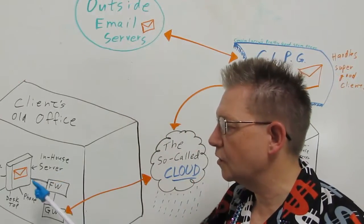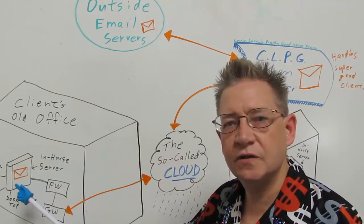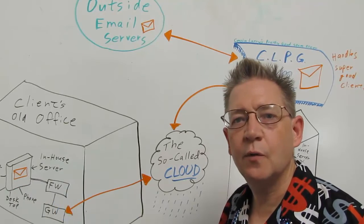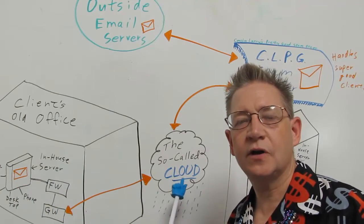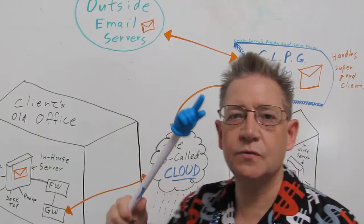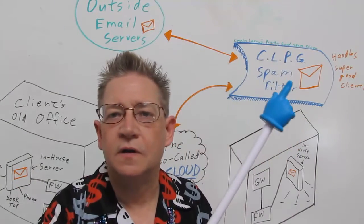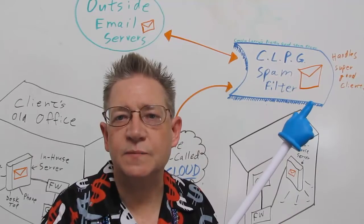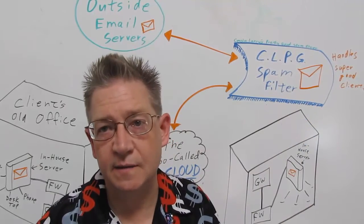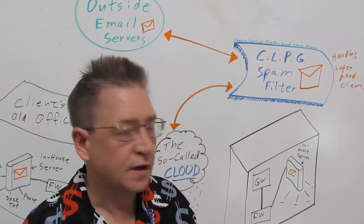Here's the setup. At the old office you've got your server, your firewall, your gateway, and then out it goes to the internet, up to Cousin Larry's pretty good spam filter, and then to outside email services.